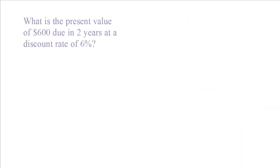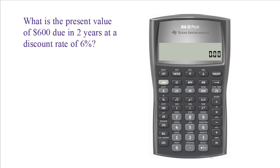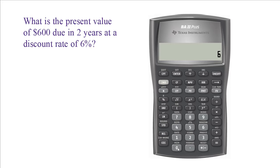Let's use the financial calculator. Enter n equals 2 by pressing 2 first and then press N. Similarly, enter 6 in I/Y. Enter 600 in FV. Enter payment as 0.